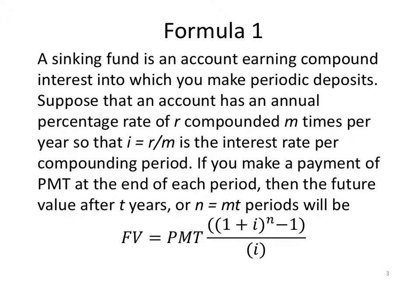Our first formula is a sinking fund. A sinking fund is a type of annuity that earns compound interest into which we make periodic deposits. Something like saving up for a 529, saving up for your child's college fund, or maybe you're saving up for your retirement. If you make a payment of PMT at the end of each period, then the future value after t years, or n equals m times t periods, will be given by FV equals PMT times ((1+i)^n - 1) divided by i.